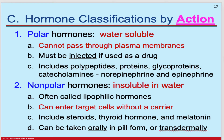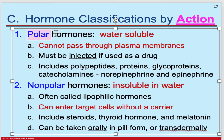A further classification of hormone activity is based on their ability to penetrate their target cells. Polar hormones are water-soluble in the plasma of the blood but cannot pass through the plasma membranes of cells. Examples include polypeptides, proteins, glycoproteins, and catecholamines — norepinephrine and epinephrine. These are polar hormones, so they have to be delivered somehow across membranes or otherwise achieve their effects.